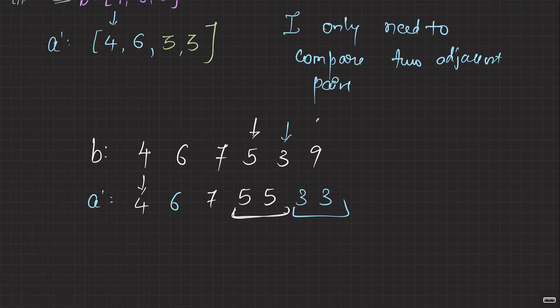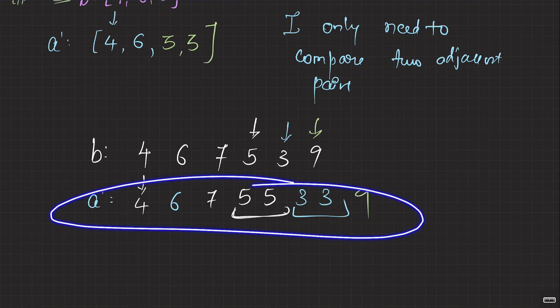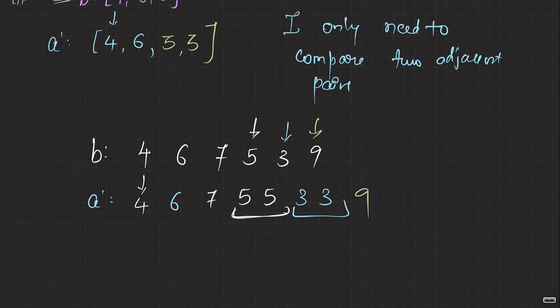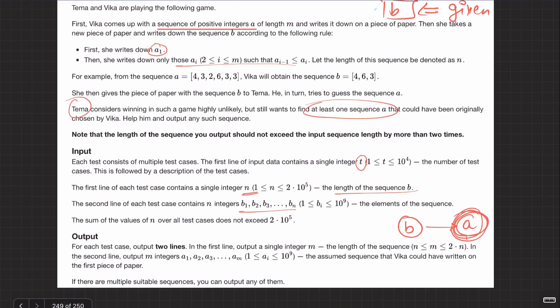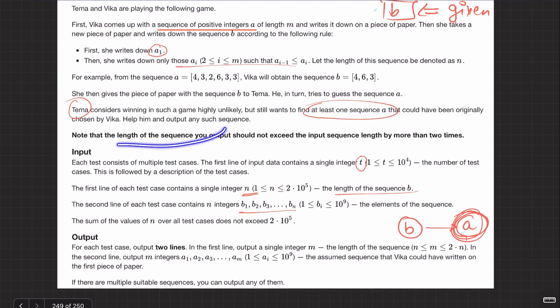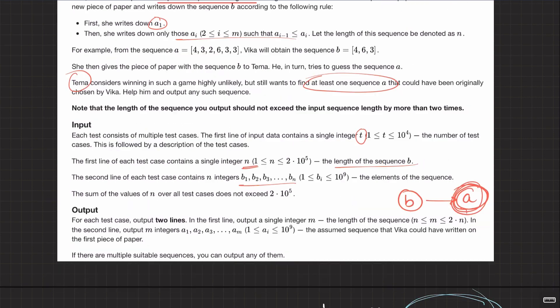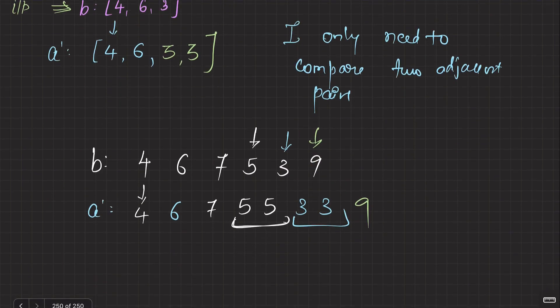Now let's go to 9. Is 9 greater than or equal to its previous element? Yes — just put it. You can simply verify that from this constructed A, you can get B back. And the constraint that the length of sequence A should not exceed the input sequence length by more than two times is obviously followed — at most we're adding one extra element per position.